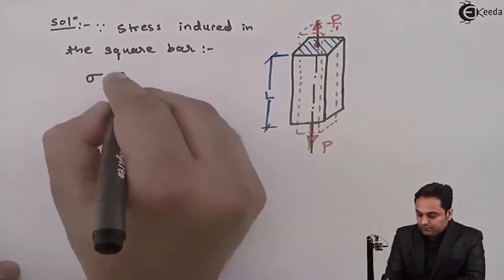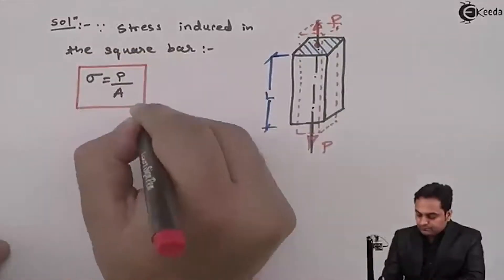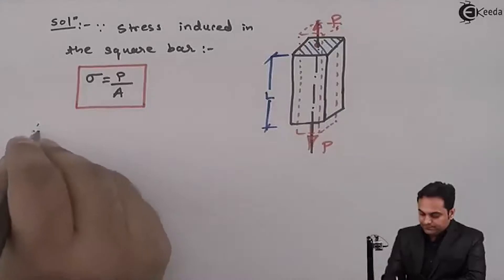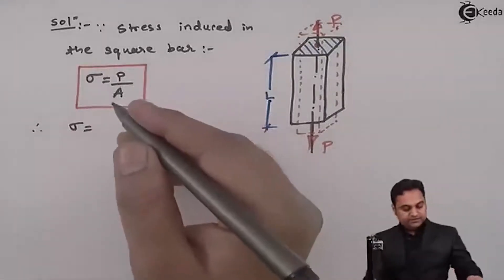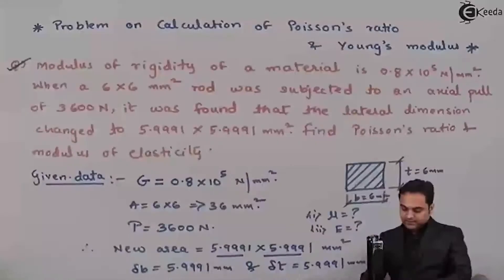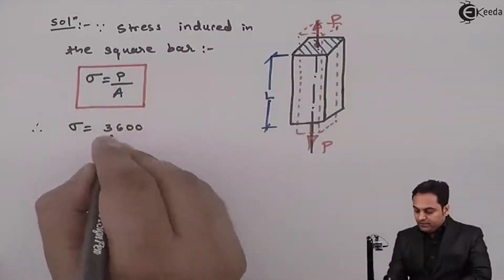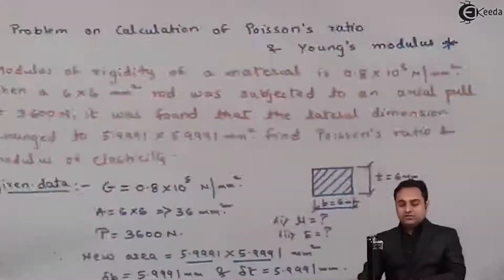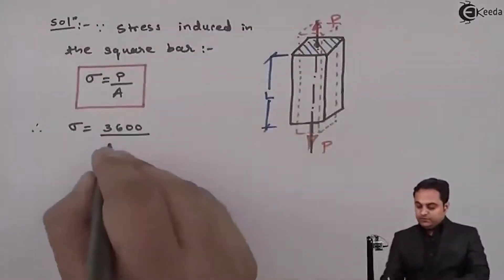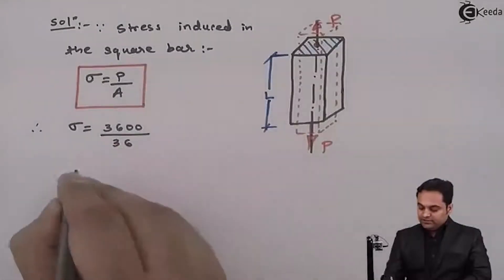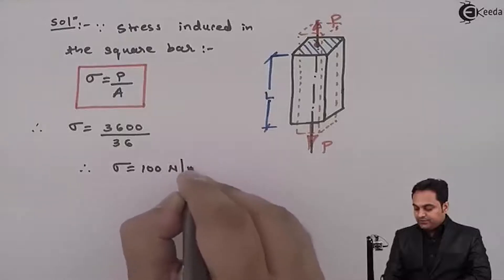Since stress induced in the square bar, sigma is equal to P upon A. Therefore, sigma is equal to P, which is given as 3,600 Newton, divided by area — using the original area before deformation — which is 36 mm square. From this, I will get the value of stress as 100 Newton per mm square.